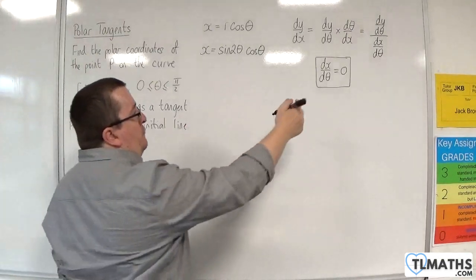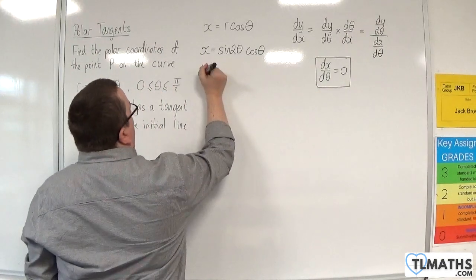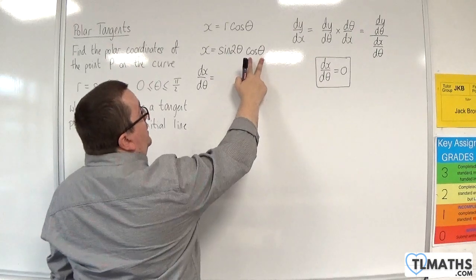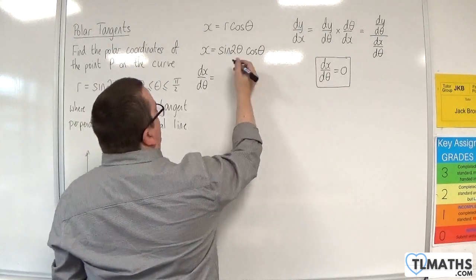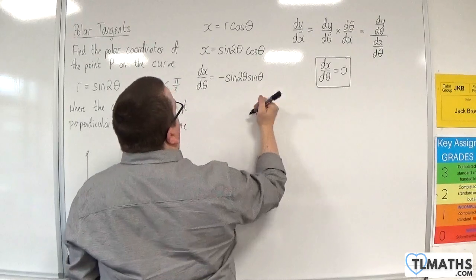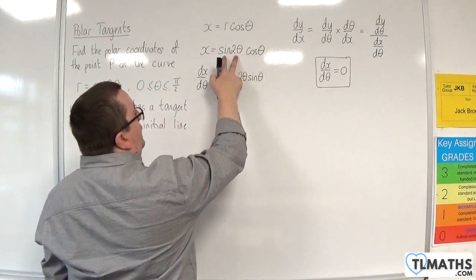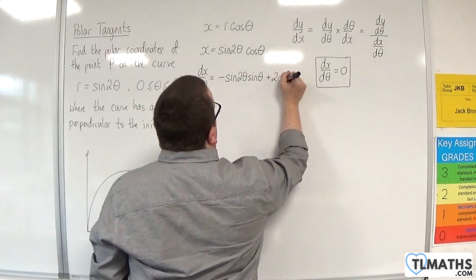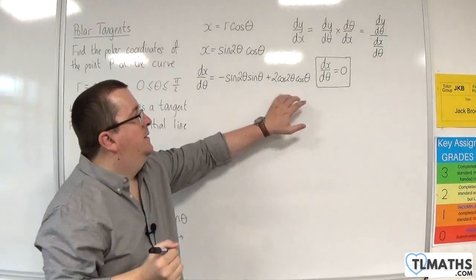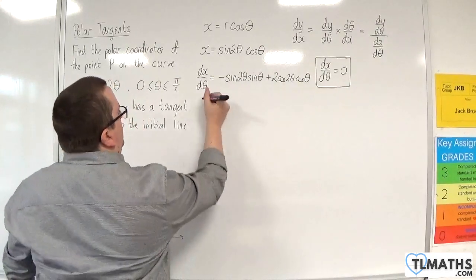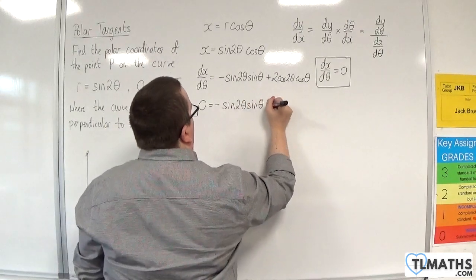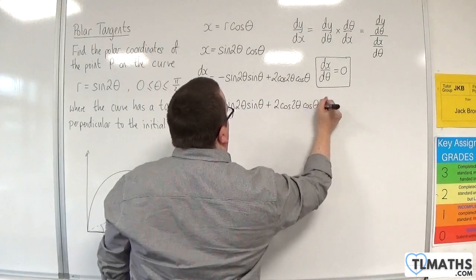Now we differentiate using the product rule to find dx/dθ. dx/dθ equals the first times the derivative of the second: cosθ differentiates to −sinθ, giving −sin2θ sinθ, plus the second times the derivative of the first, giving +2cos2θ cosθ. We set that equal to 0: 0 = −sin2θ sinθ + 2cos2θ cosθ.